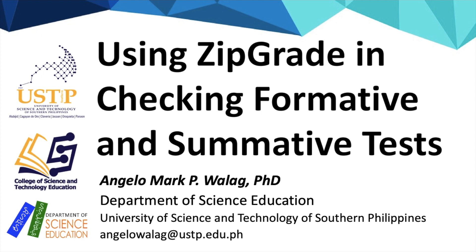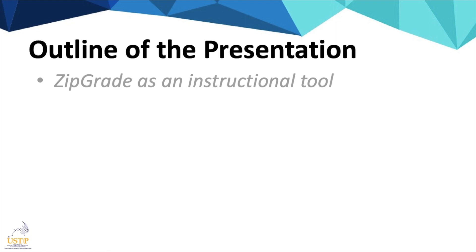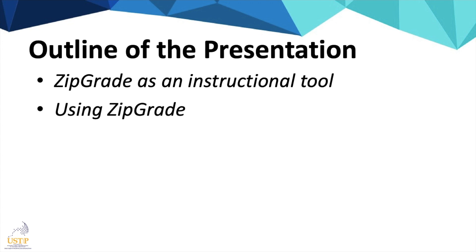For this video lecture, we will be covering an essential mobile application which teachers and assessment professionals can use in checking quizzes and tests that are dichotomous. This mobile application is ZipGrade. For this tutorial, we will be covering the features of ZipGrade as an instructional tool, instructions on how to use it, and tips on how we can maximize its use.